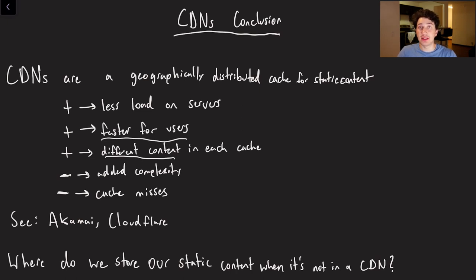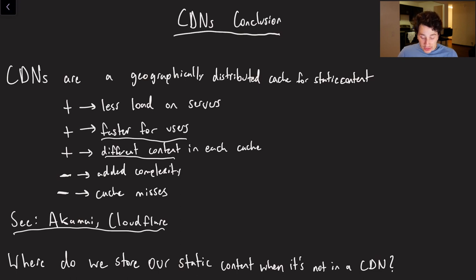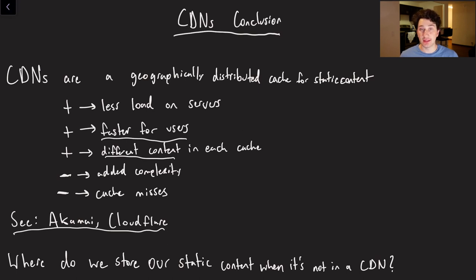CDNs are typically something you want to be outsourcing, because otherwise you'd have to set up all these nodes in all these different places. Feel free to look at the docs for things like Akamai and Cloudflare. In terms of what we're on to next, I want you guys to start thinking about — CDNs are a cache, and as a result, you can't always store all of your static content in those caches. So if they're not in the cache, where would we actually be storing them? Because a typical database like we've discussed in the past is not necessarily the best answer. Anyway, guys, hope you enjoyed this video, hope it was informative and helpful, and I will see you in the next one.